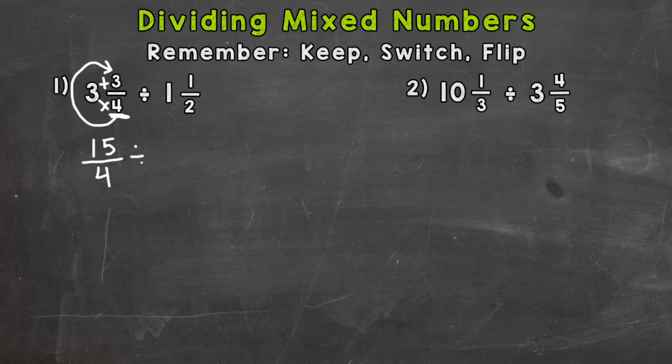Divided by, let's do one and a half now. Two times one is two, plus one is three. Keep the denominator of two the same. Now we have 15-fourths divided by three-halves. So now we need to follow our dividing fractions rules.